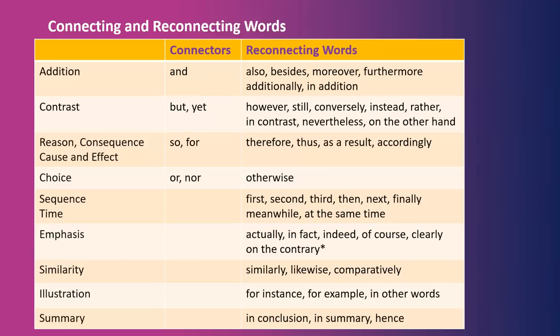For choice, the connectors are "or" or "nor." The reconnecting word is "otherwise." For sequence or time, we don't have connectors, but we use many reconnecting words at the beginning of sentences: first, second, third, then, next, finally, meanwhile, at the same time. For emphasis, the reconnecting words are: actually, in fact, indeed, of course, clearly, on the contrary. Some people classify "on the contrary" as a contrasting word, but actually it indicates emphasis. There's a whole video explaining that, linked below.